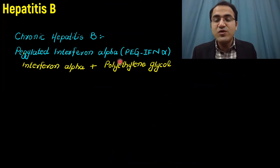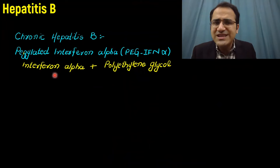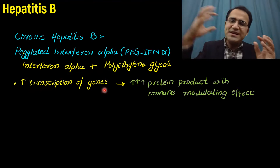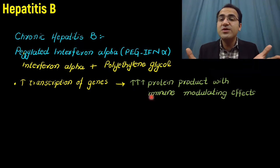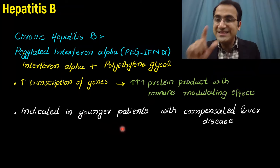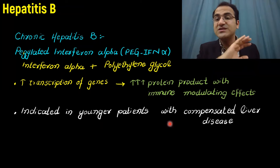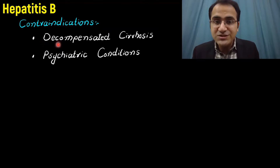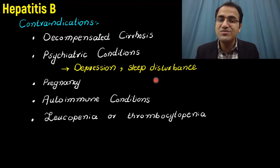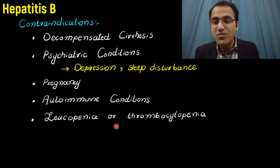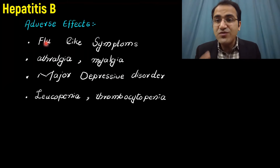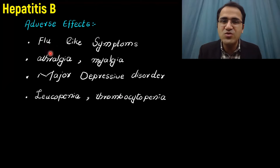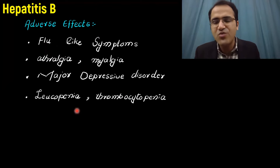For chronic hepatitis B, pegylated interferon alpha — a combination of interferon alpha and polyethylene glycol — is used. It boosts the immune system by increasing transcription of genes that enhance immune response. It is only indicated in younger patients with compensated liver disease and is contraindicated in decompensated cirrhosis. Contraindications include psychiatric illnesses like depression and sleep disturbance, pregnancy, autoimmune conditions, leukopenia, and thrombocytopenia. Adverse effects include flu-like symptoms, arthralgia, myalgia, major depressive disorder, leukopenia, and thrombocytopenia.